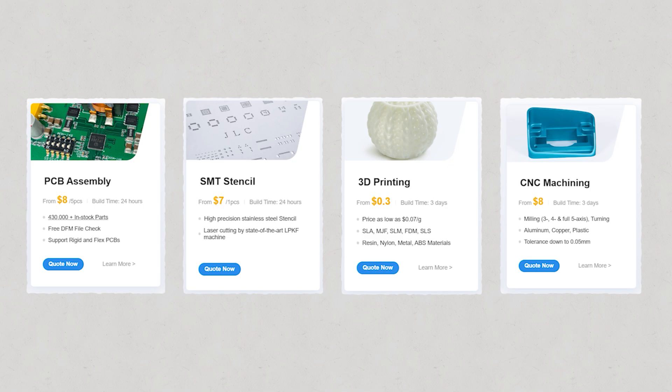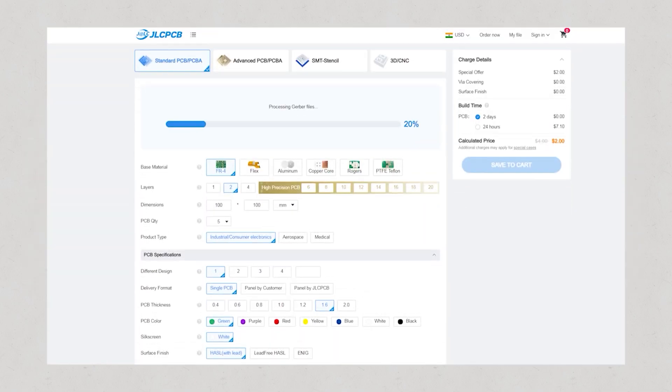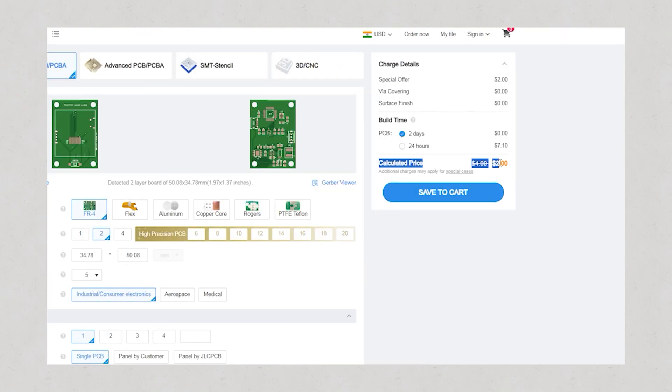3D printing and CNC machining, making it a one-stop shop for all your hardware needs. Simply upload your Gerber file, choose your settings and get your PCB with any color mask for just $2.